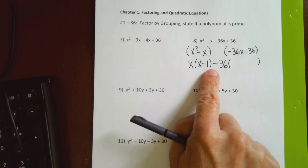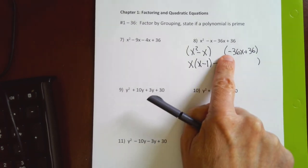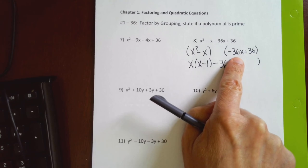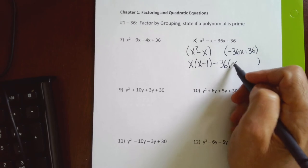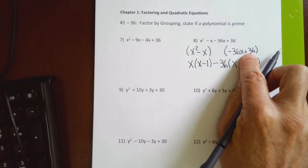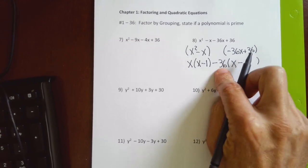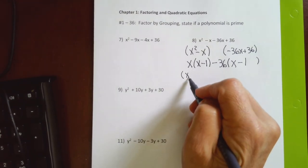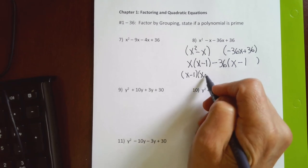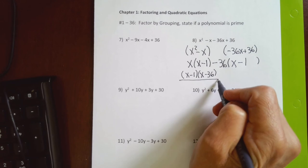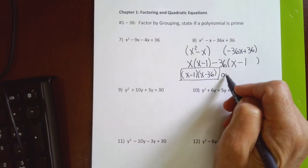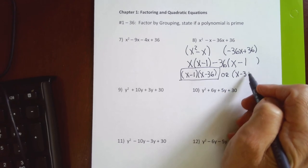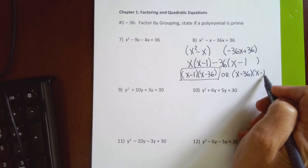Flipping signs because I factored out a negative and dividing by 36: the negative sign turns positive, 36 ÷ 6 = 1 (no number needed since I have x), leave the x. The positive sign flips to negative and 36 ÷ 36 = 1. If you don't get a common parenthesis, the strategy doesn't work and we say the polynomial is prime. The answer is (x − 1)(x − 36), or equivalently (x − 36)(x − 1).